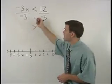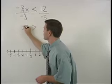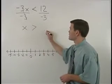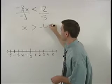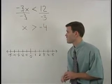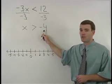On the left side, the negative 3s cancel and we're left with x. On the right side, 12 divided by negative 3 is negative 4. So we have x is greater than negative 4.